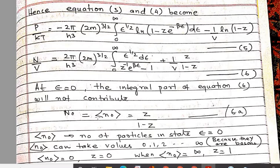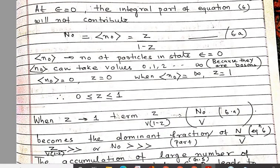So n₀, the occupation number for ε = 0, becomes n₀ = z/(1 − z). This n₀ is the number of particles in the state ε = 0, the ground state. We know the occupation number can take any values for bosons unlike fermions, so a large number of particles can exist in the ground state. When n₀ = 0, z = 0, and when n₀ → ∞, z → 1. Thus, when z → 1, the term z/(1 − z) becomes the dominant term corresponding to accumulation of a large number of particles in the single state ε = 0, leading to Bose-Einstein condensation.